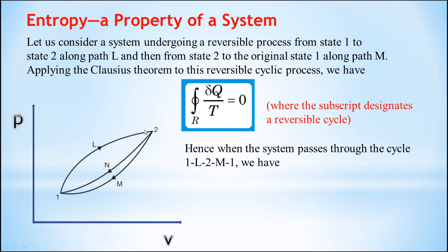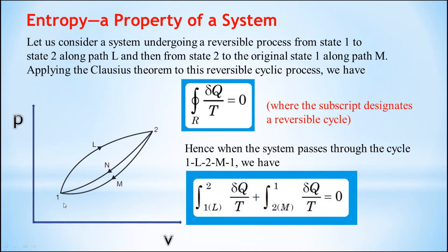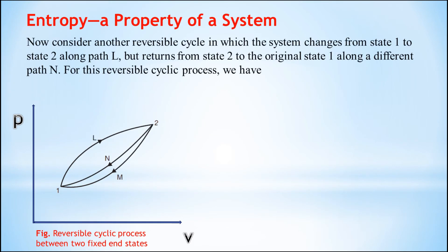Hence when the system passes through the cycle 1-L-2-M-1, we apply the Clausius theorem. The lower limit is 1 and upper limit is 2 along path L, so we write the integral from 1L to 2 of δQ/T, plus the process returns to the initial state along path M, so we write the integral from 2M to 1 of δQ/T equal to zero.